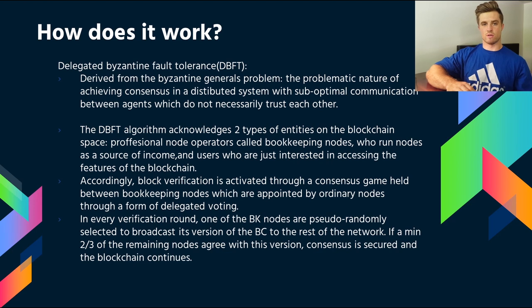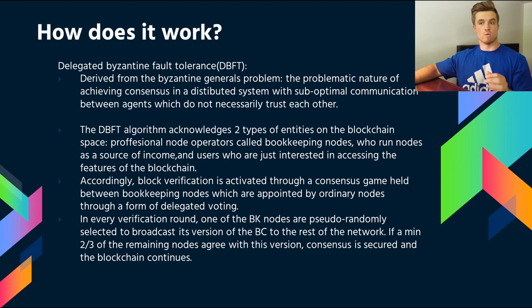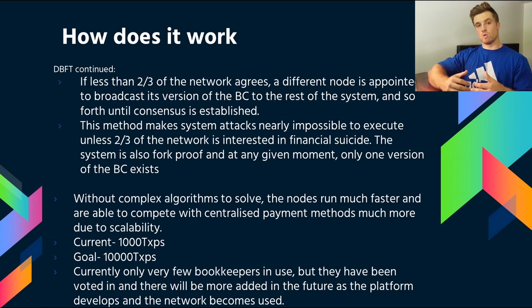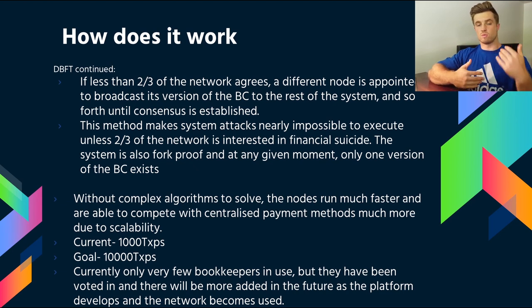Block verification is held through a consensus process between bookkeeping nodes, appointed from ordinary users through delegated voting. In every verification round, one bookkeeping node will be pseudo-randomly selected — pseudo-randomness being a method of randomness which seems random but is not actually random. That node broadcasts its version of the blockchain to the rest of the network, and if a minimum of two-thirds of the remaining nodes agree, this version of the blockchain will be published and consensus is secured.